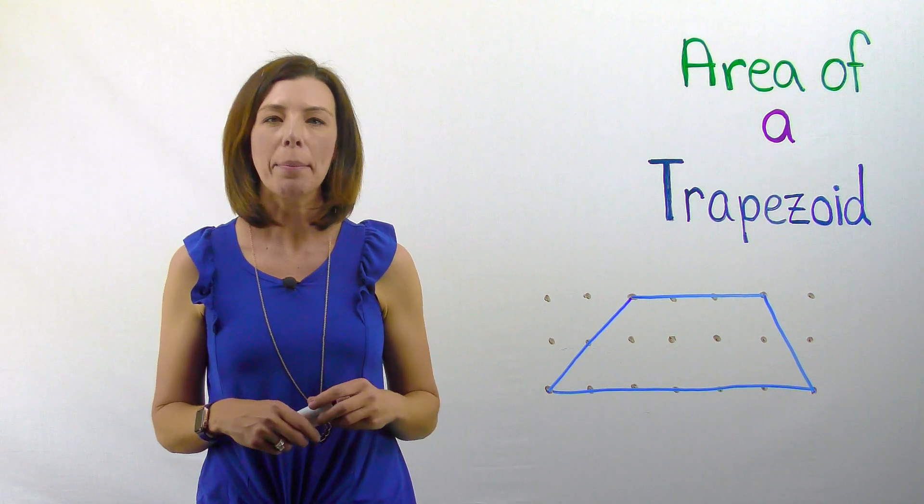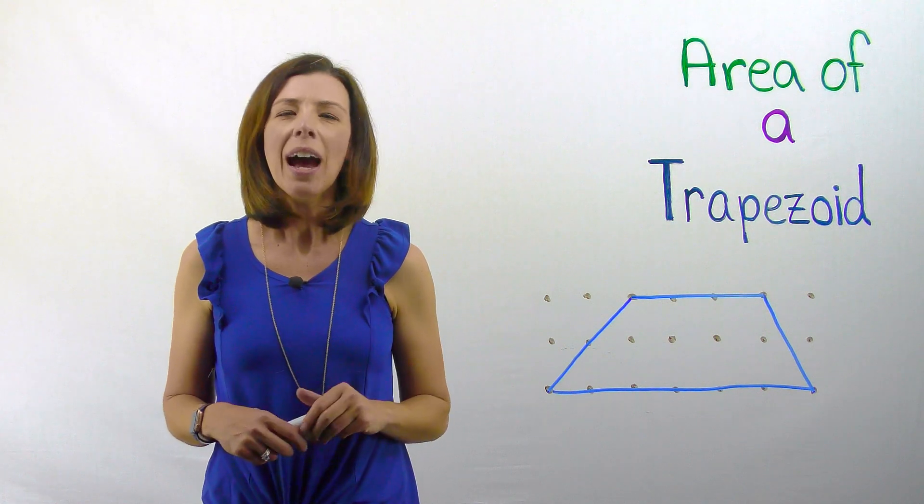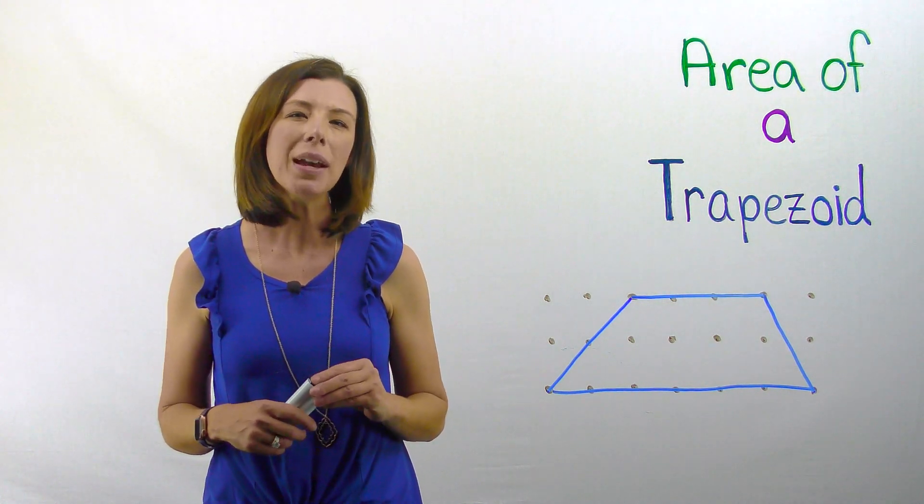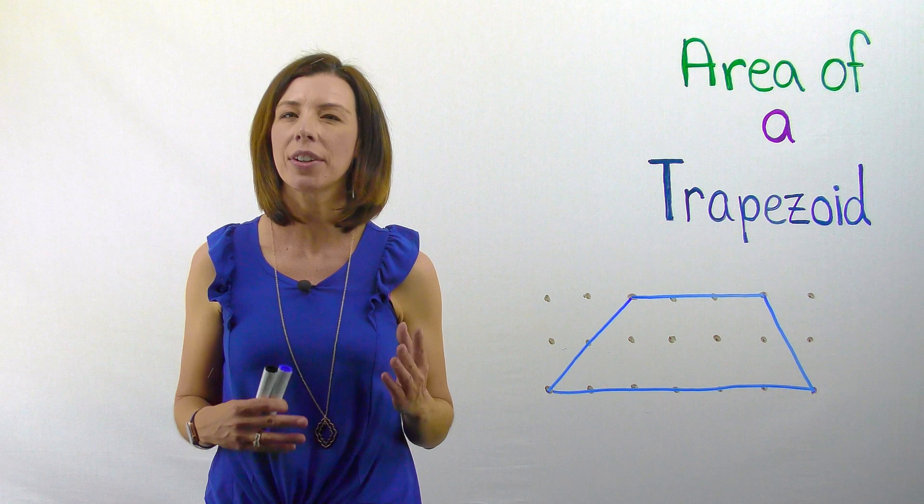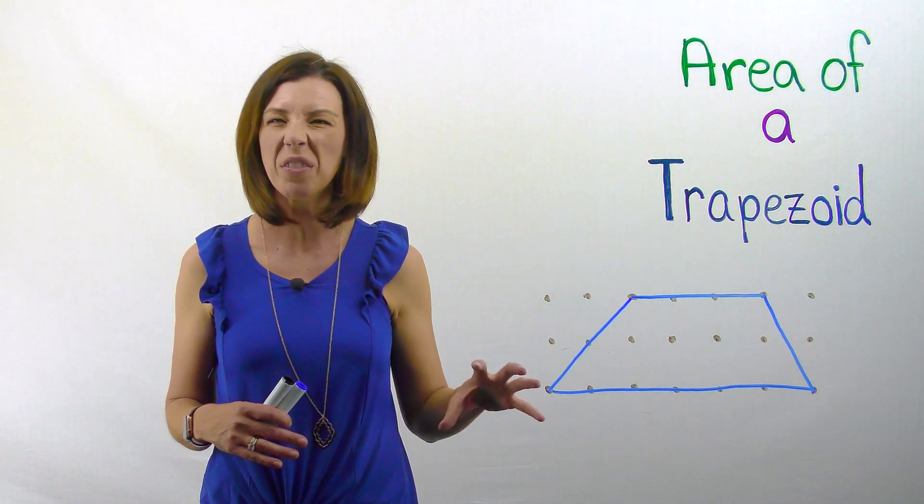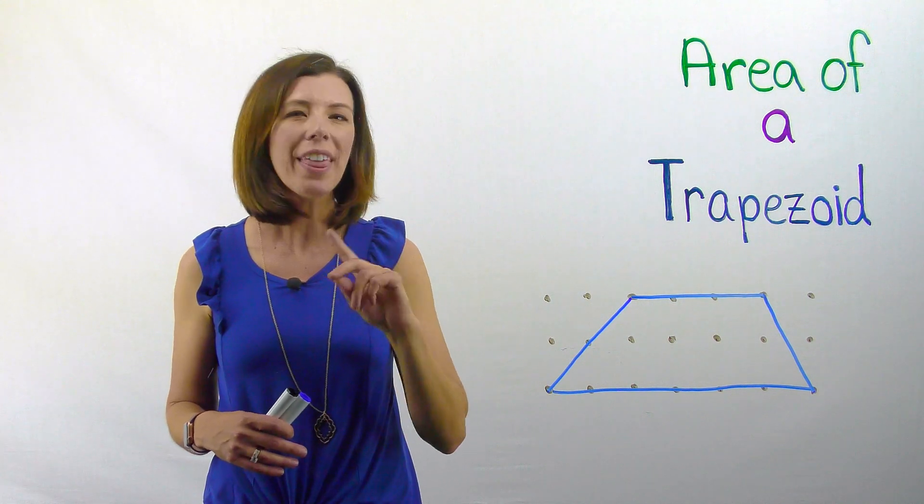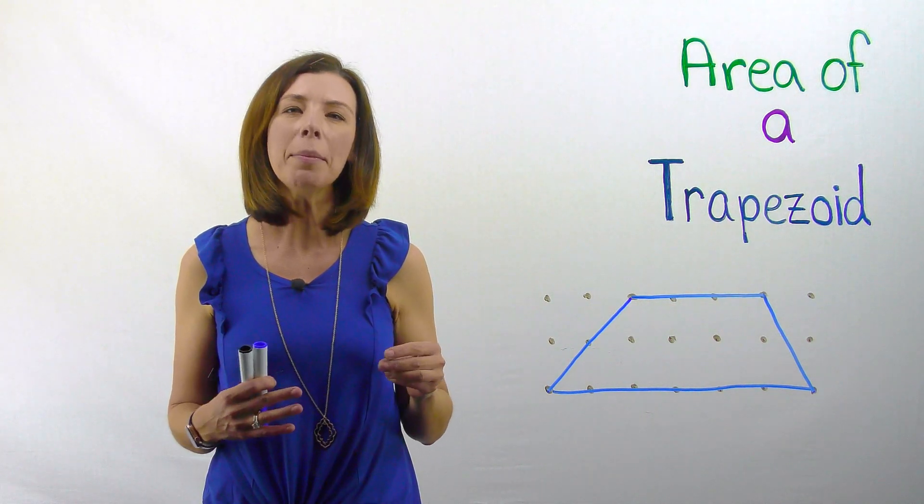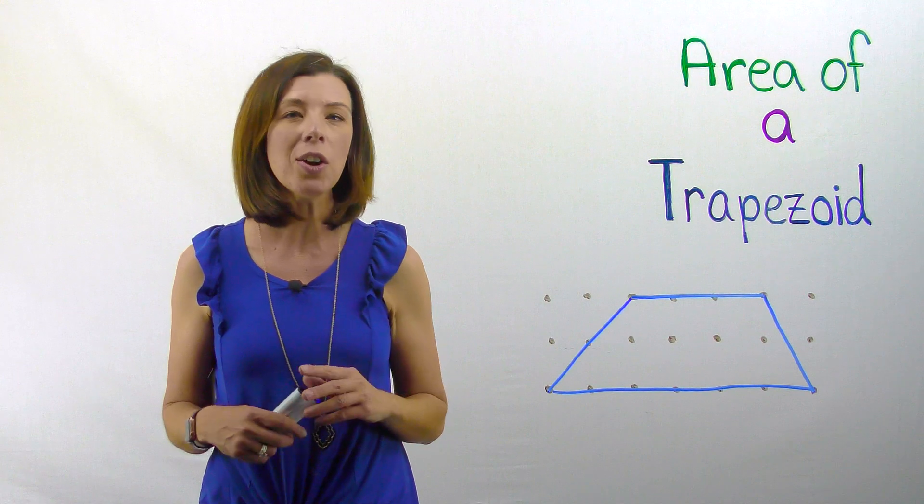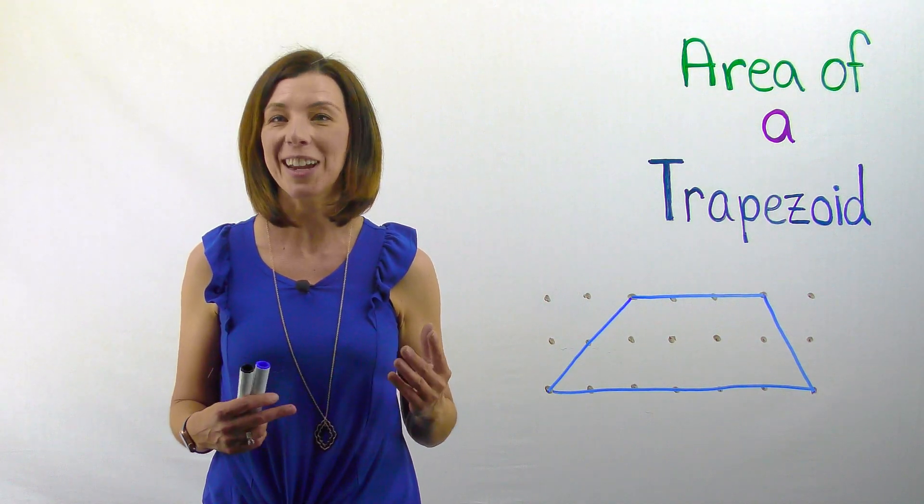Now that you've got your trapezoids cut out, I want you to try rotating them and see if you can make another shape. You might be tempted to make sort of a weird hexagon looking shape. That's not what I mean. I want you to make a shape that maybe you already know how to find the area for.